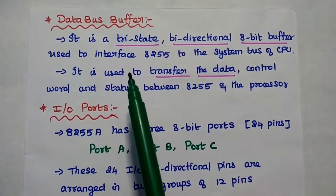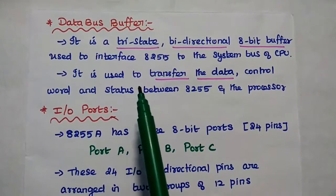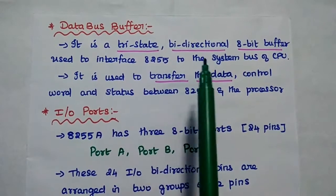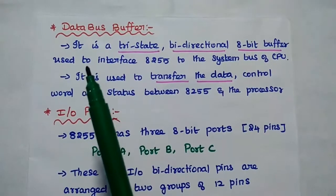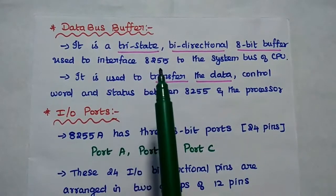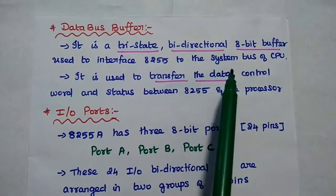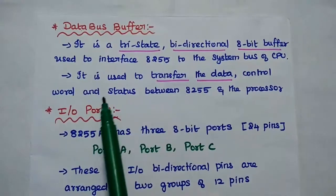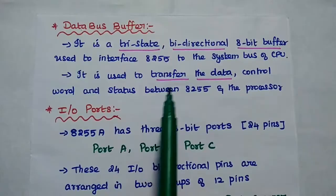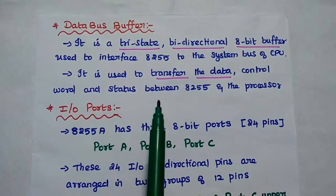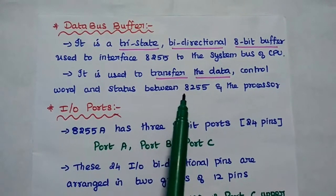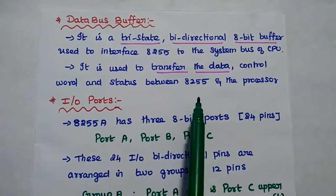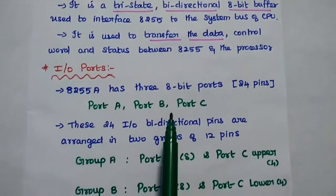The Data Bus Buffer is a tri-state, bidirectional 8-bit buffer which is used to interface the 8255 with the system bus of the CPU. It is used to transfer the data, control word, and status information between the processor and the Programmable Peripheral Interface 8255.